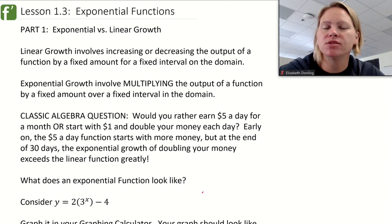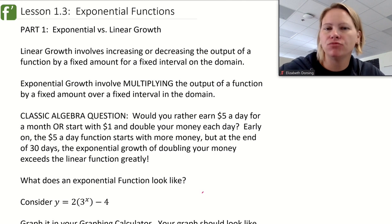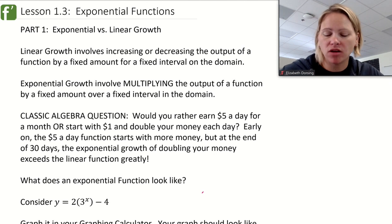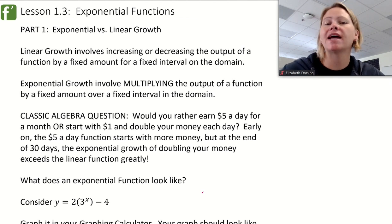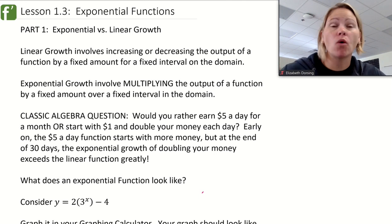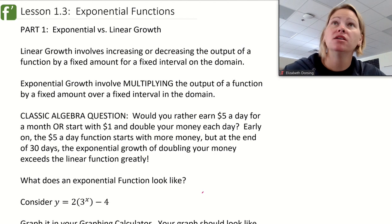A linear function describes something that is growing at a constant rate — that rate is called the slope of the line. Exponential growth involves a different kind of growth. Instead of growing at a constant rate, an exponential growth problem means we are growing by some multiplicative value. Each time we might be doubling, or tripling, or sometimes decreasing.